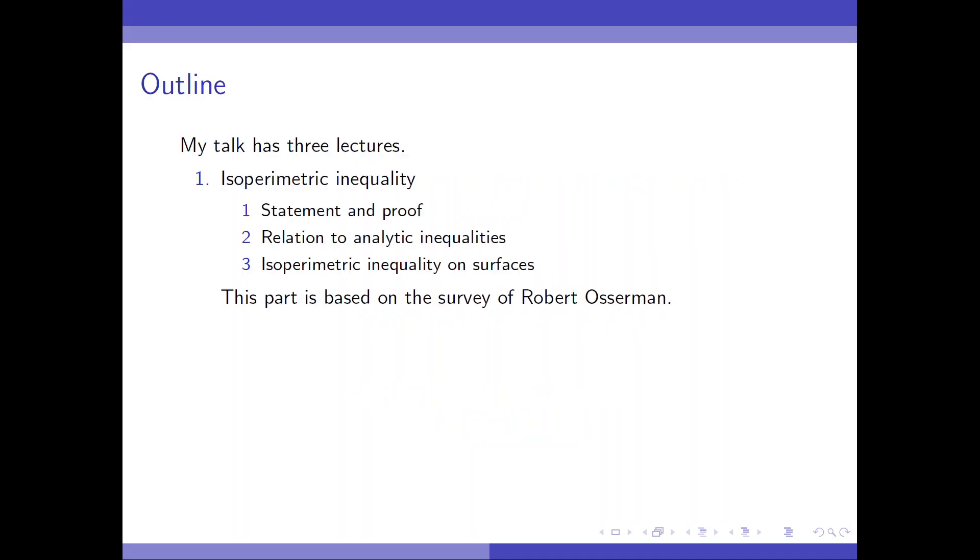My talk has three lectures. The first one is on isoperimetric inequality, based on the survey of Robert Osserman. In the second one, I'll tell you the statement of the convex body isoperimetric conjecture and what is known and what our new results are. And I'll also talk about some background material needed to investigate this conjecture.